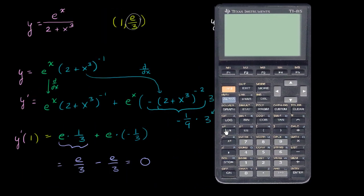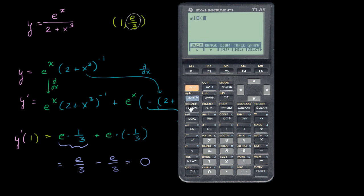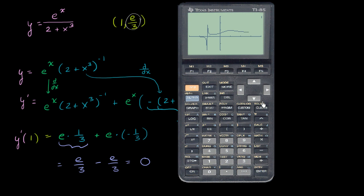So let me get my graphing calculator out. I'm in graphing mode — you can get there by going to graph y equals. I'll enter e to the x power divided by 2 plus x to the third power. I set the range ahead of time to save time. Let me graph this. Now we can trace to get to when x equals 1. Right over there, you see y is equal to e over 3 — this is the decimal expansion right here. And it does look like the slope right here is 0, that the tangent line is just a horizontal line at that point. So that makes me feel pretty good about our answer.